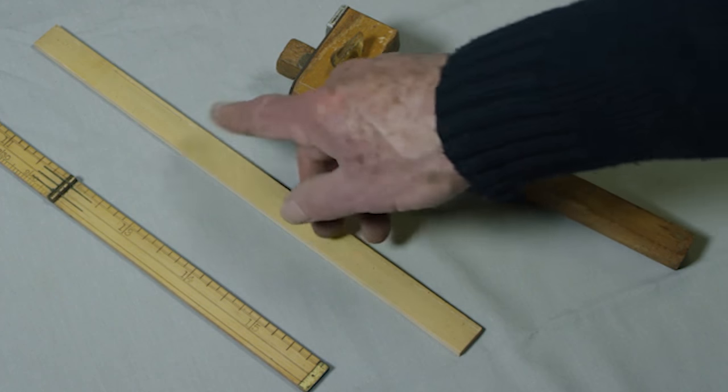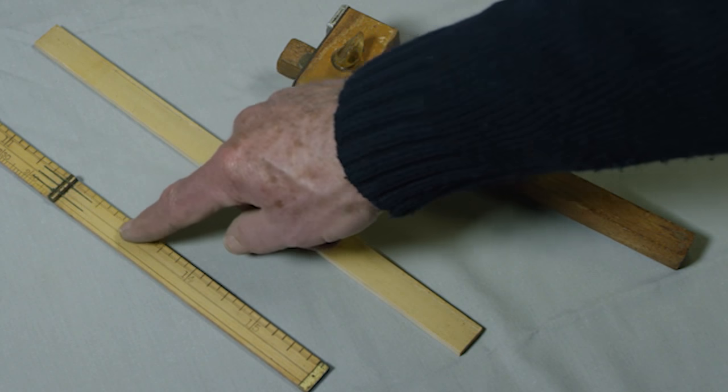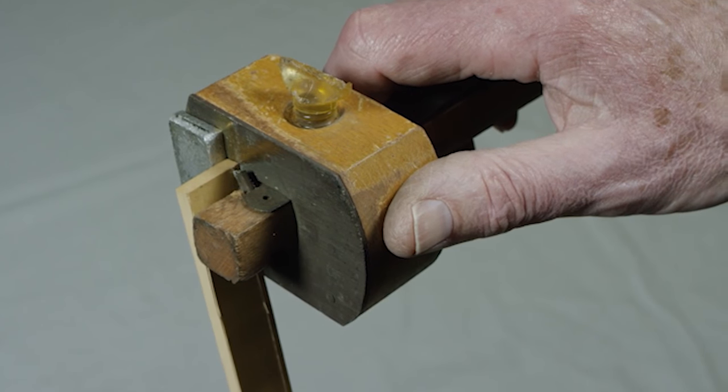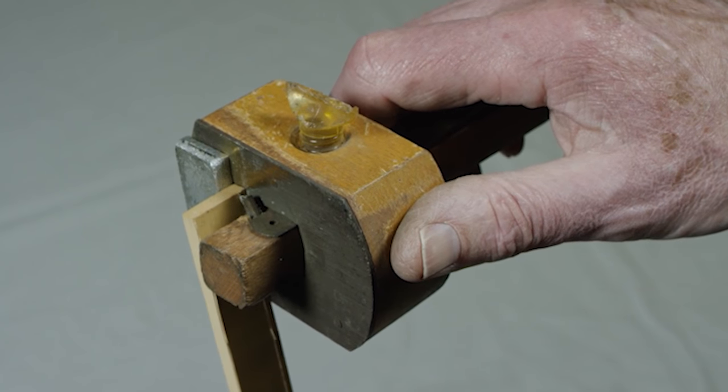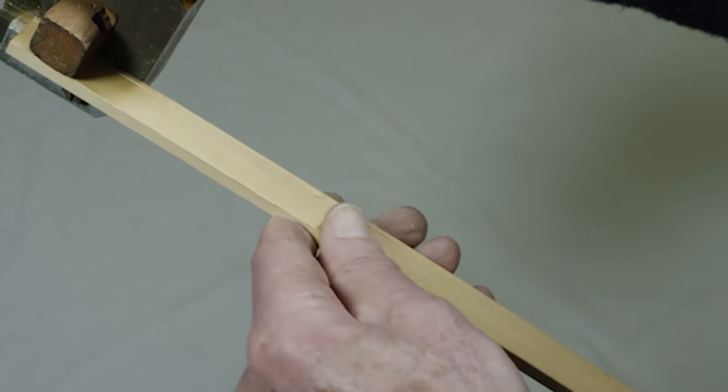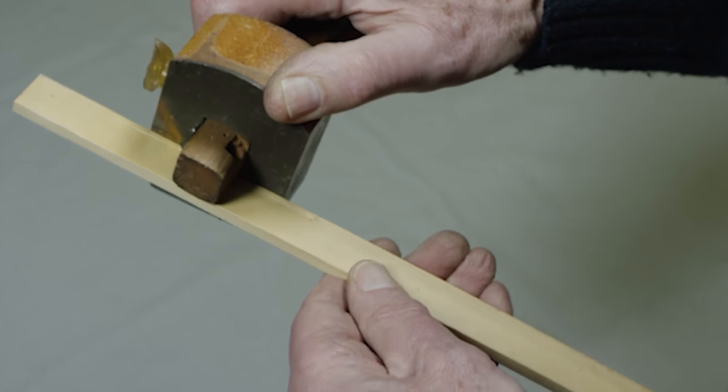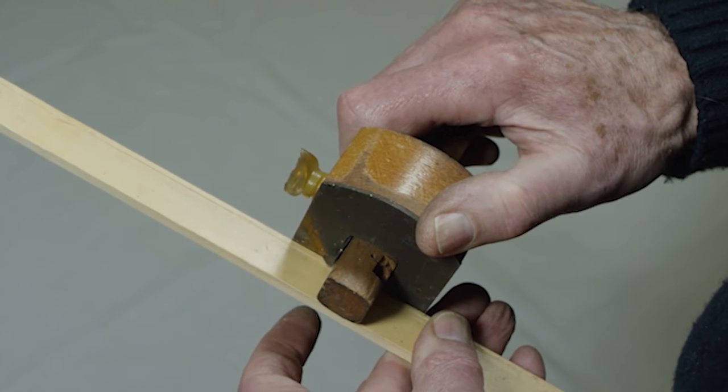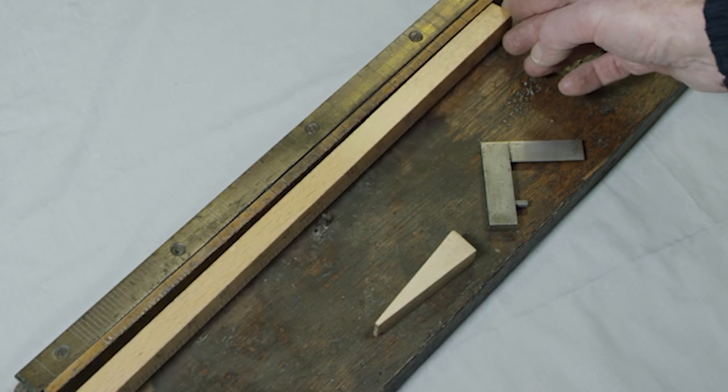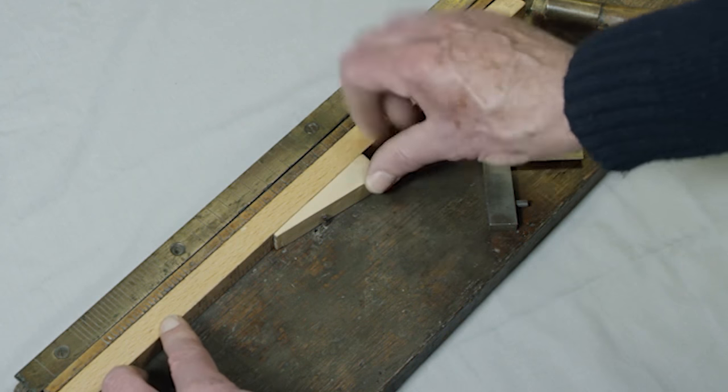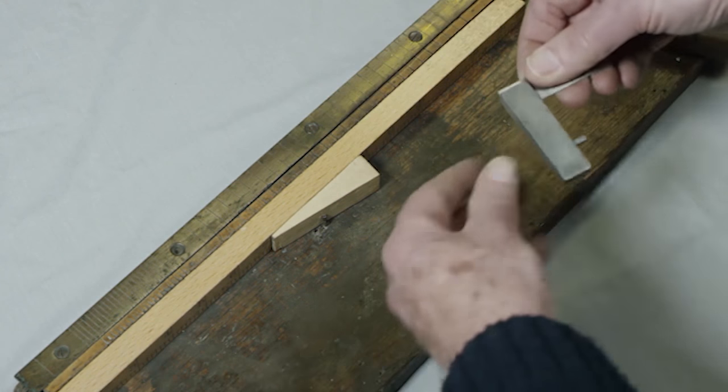The rule is now ready for marking with graduations for the line of measure. A gauging line is drawn down the length of the rule and the rule is then marked by machine or by hand using a dividing board and scribing knife or hammer and punch.